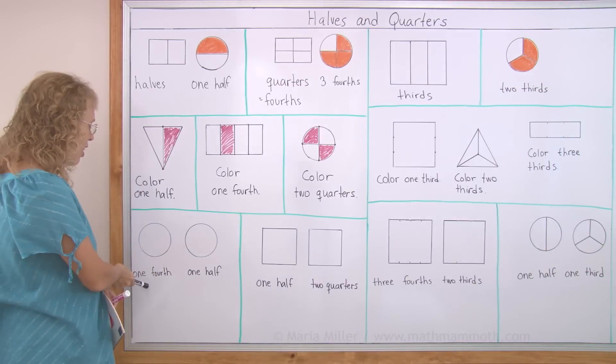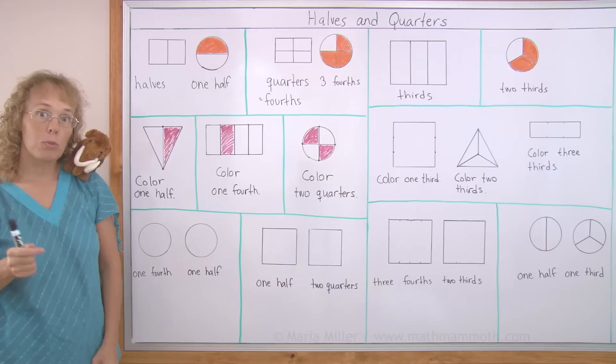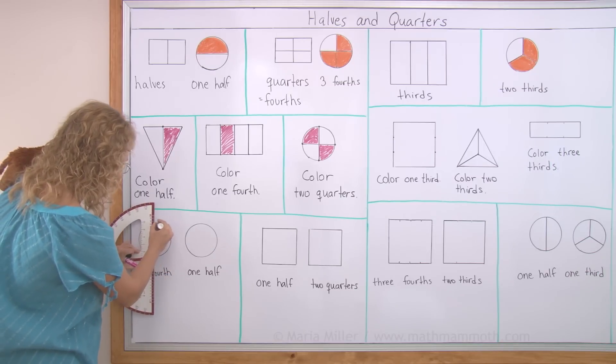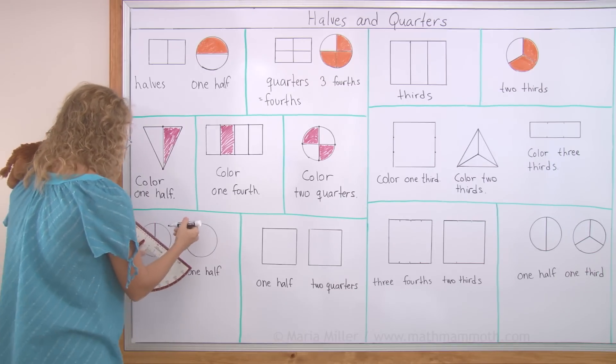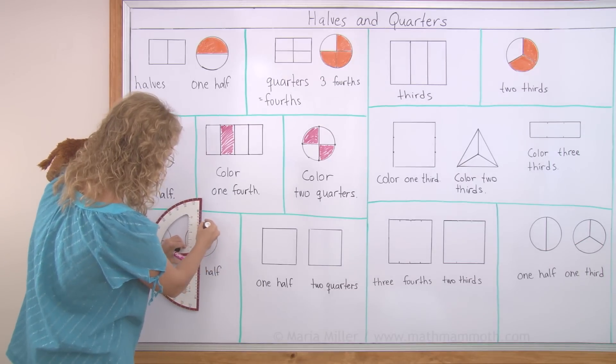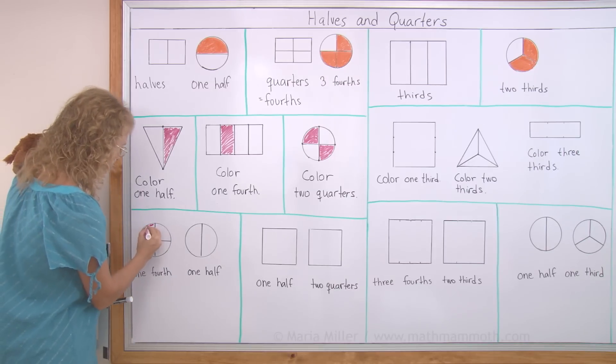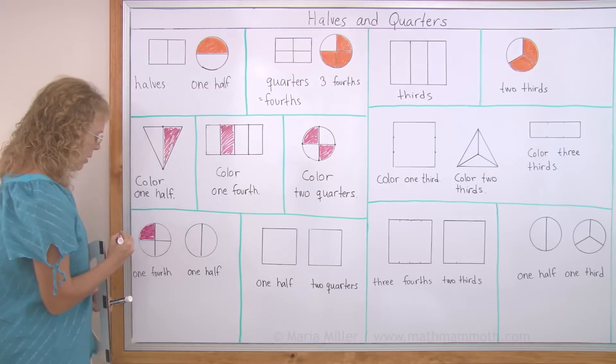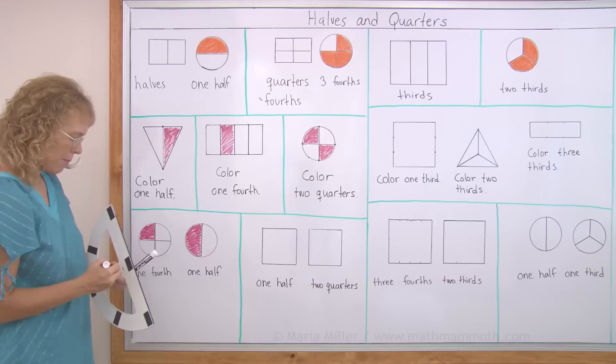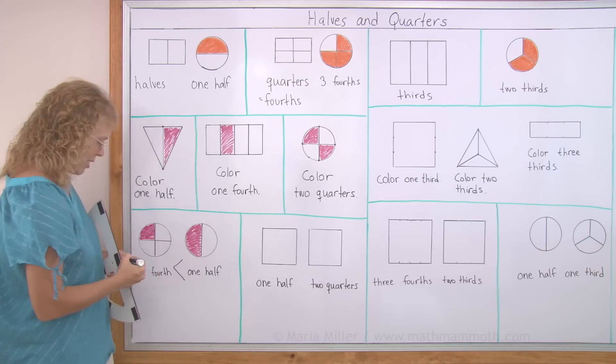Over here, we're going to first color one fourth and one half, and then we're going to check which one is more. Okay. For the fourth, I would have to first divide it into four parts. And this is an easy way. You just draw those lines. For one half, like that. And now the coloring. One fourth. And then one half. Here. Which one is more?